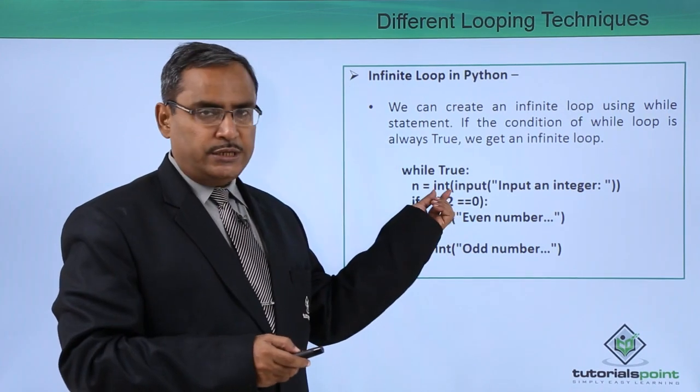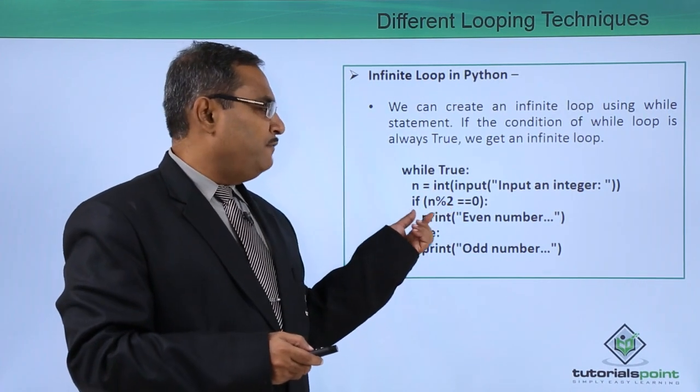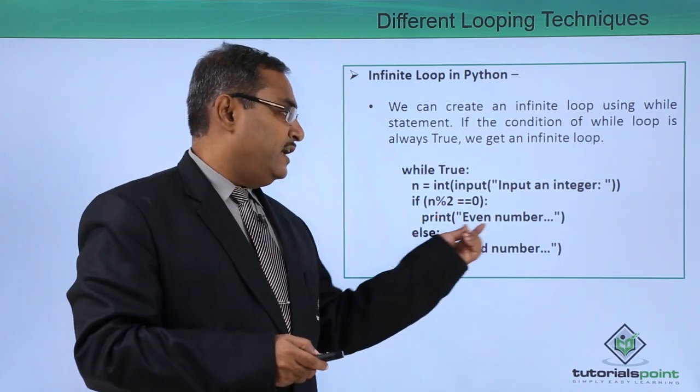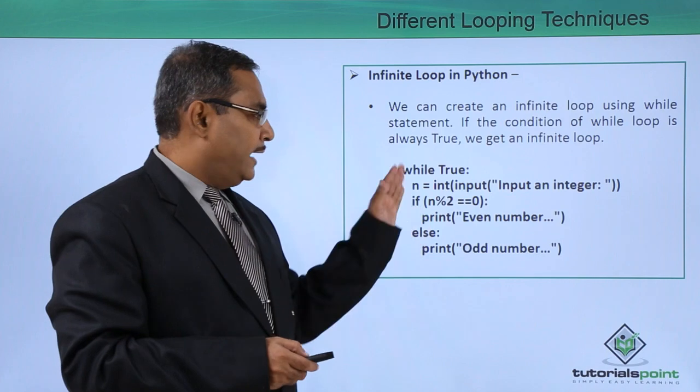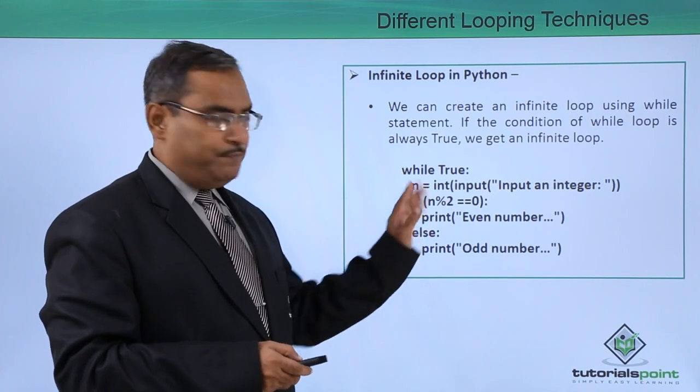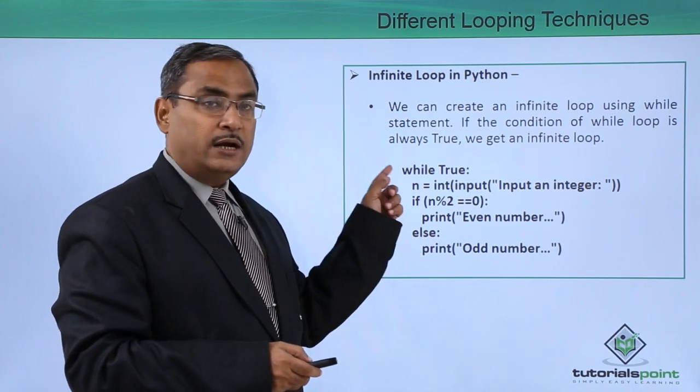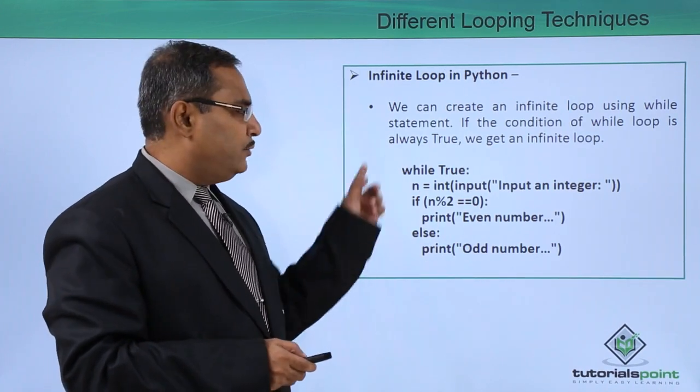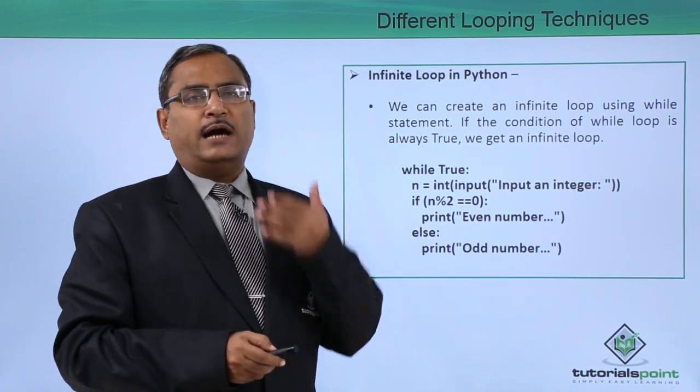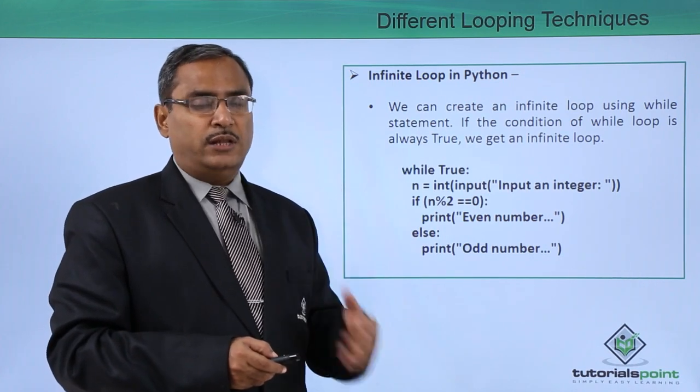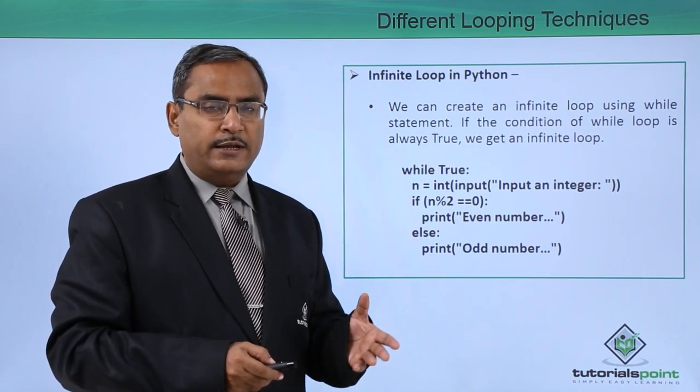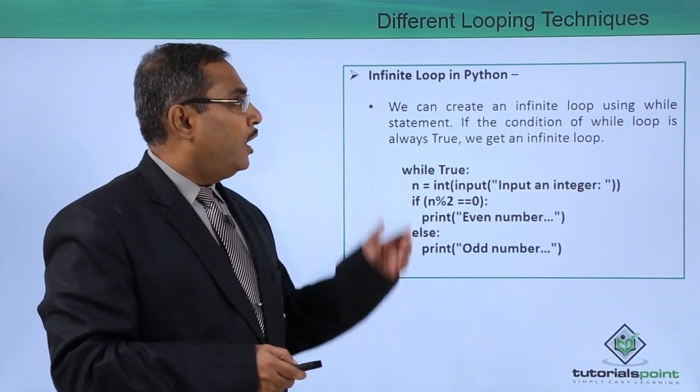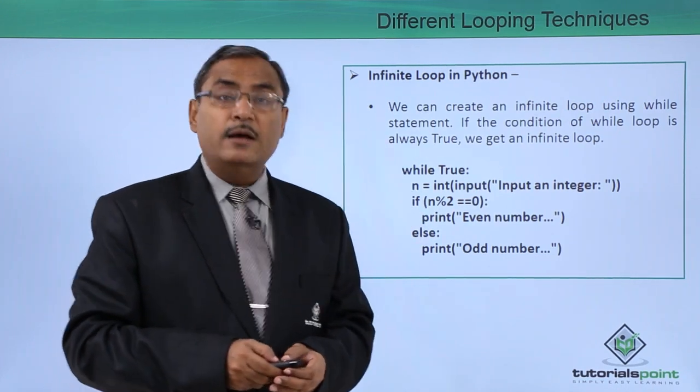I am doing the type casting here I am converting it to integer. If n percentage to is equal to equal to 0 print even number else odd number and here see the indentation is there that means all these statements are under the while construct. What will happen it will go on executing and it will be asking values from the keyboard as input and it will just tell whether the number whatever you have provided is even or odd. This is a good example of this infinite looping in Python.